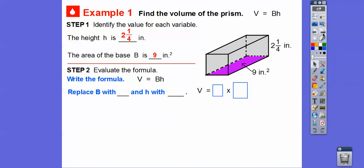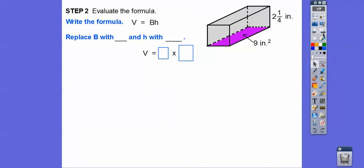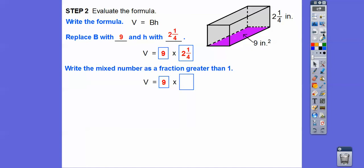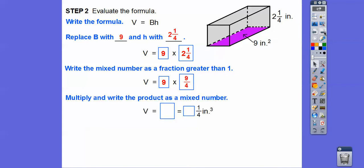We'll plug it into the formula: replace B with 9 and H with 2 and 1/4. Now let's change 2 and 1/4 to a fraction greater than 1. The denominator 4 times the whole number 2 is 8, and 8 plus 1 is 9. So 2 and 1/4 becomes 9/4. Now we multiply 9 over 1 times 9 over 4: 9 times 9 is 81, and 1 times 4 is 4, so we get 81/4.